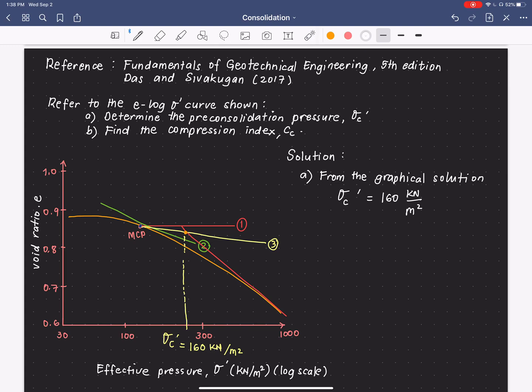Again, take note that the x-axis is a log scale. So, if you're going to plot it to scale, we can get the exact value of 160 kilonewton per square meter.